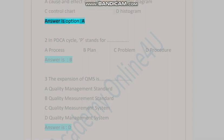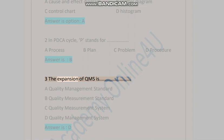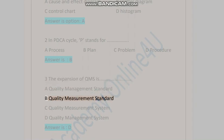Question two: In PDCA cycle, P stands for — A) process, B) plan, C) problem, D) procedure. Answer is B. Question three: The expansion of QMS is — A) quality management standard, B) quality measurement standard, C) quality measurement system, D) quality management system. Answer is D.